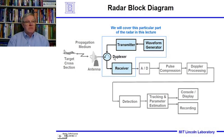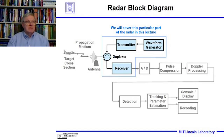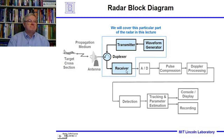Vice versa — this switch will isolate the transmitter from the receiver. There'll also be the receiver section, and the signals will either be going from the transmitter out the antenna, or the received echoes will be coming back from the target through the duplexer and into the receiver.